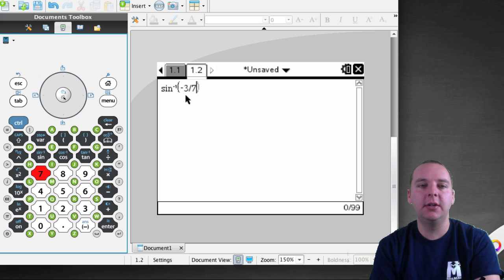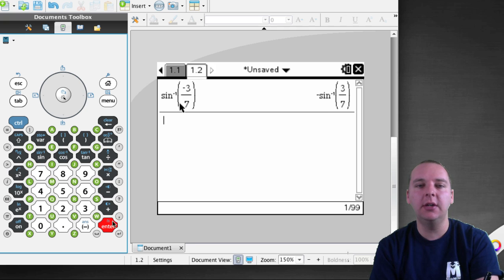So I'll go sine inverse. Make sure you do sine inverse and not sine of negative 3 over 7. Now, when I push enter, something strange is going to happen. You push enter and it basically looks like it gives you the same expression. It writes it as negative sine inverse of 3 over 7. But that's useless. That doesn't do me much more good.